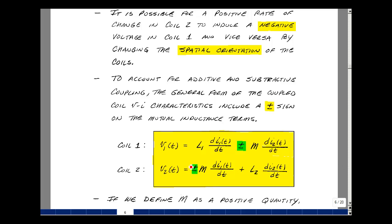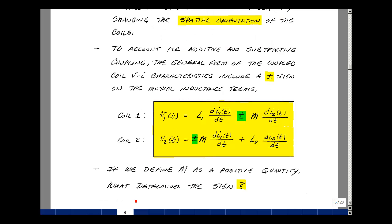Both plus signs go together, both minus signs go together. If we define M as a positive quantity, what would determine the true sign if we were to measure this in lab?